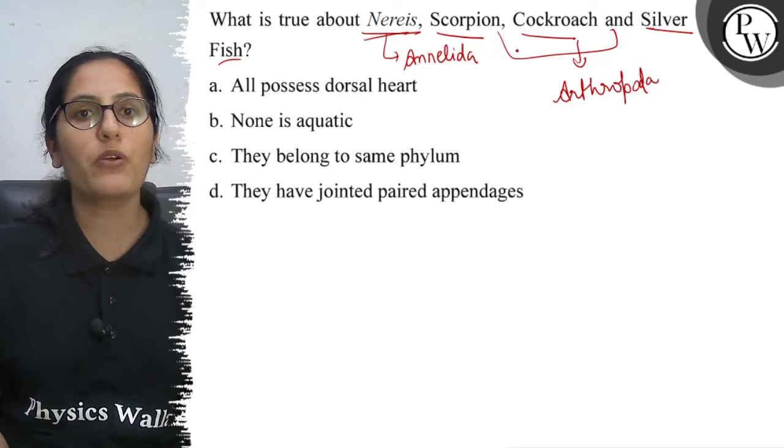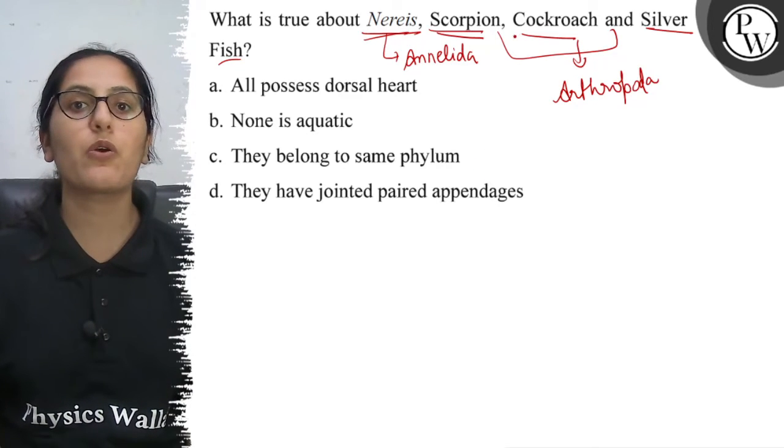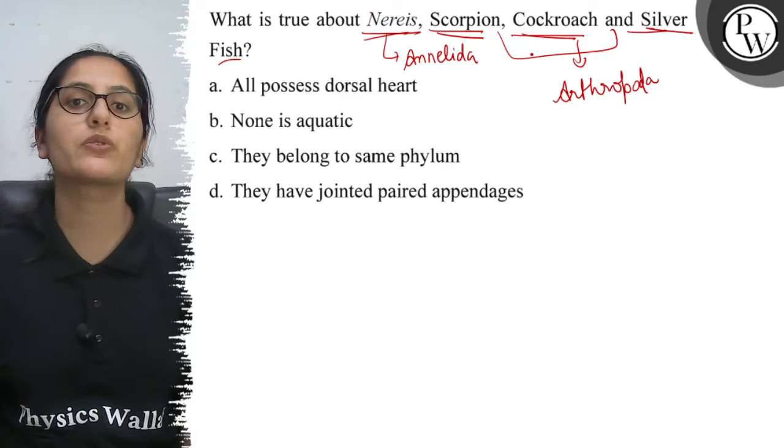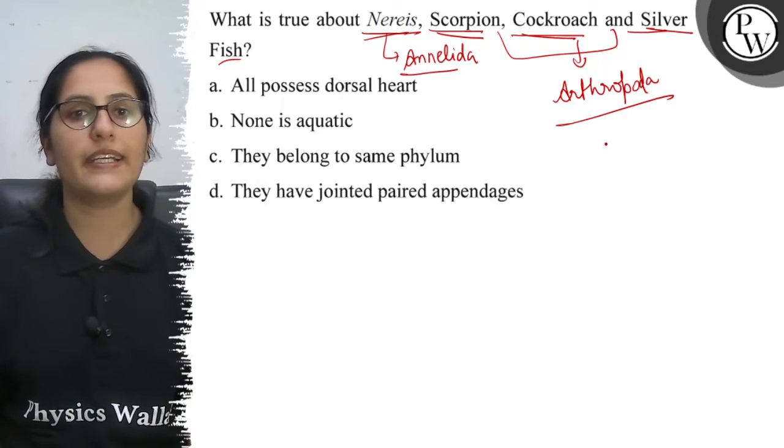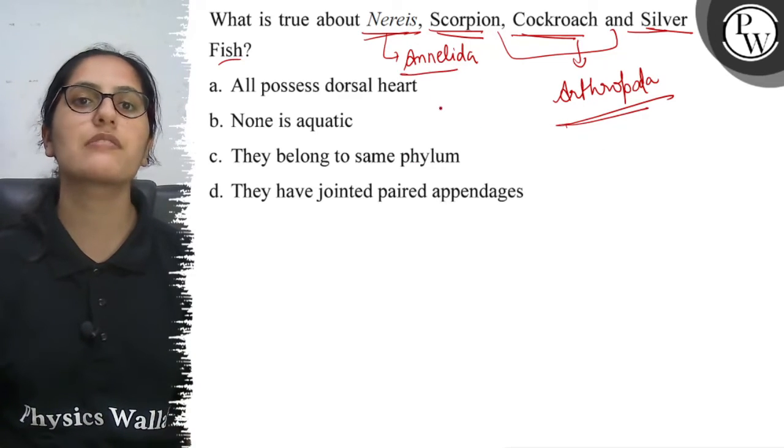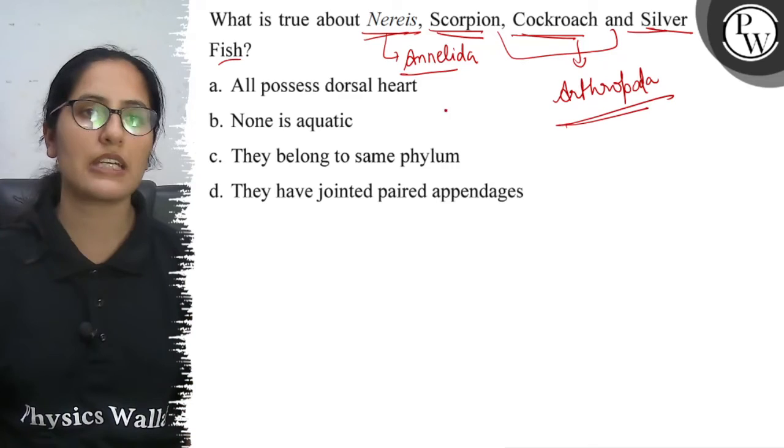See, Scorpion belongs to the Arachnida, Cockroach and Silverfish belong to the Insecta class of phylum Arthropoda. So let's tell us which is related to Arthropoda, which is the characteristic feature or which is true statement.